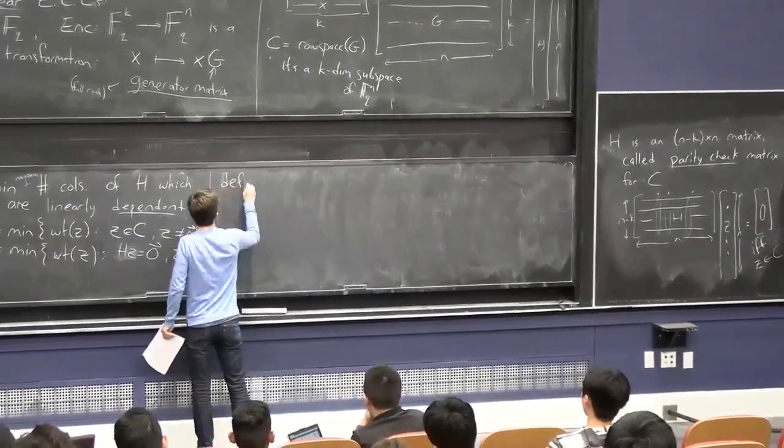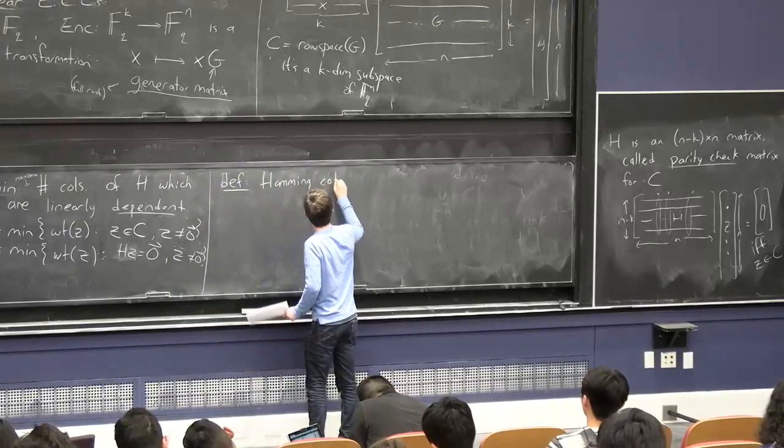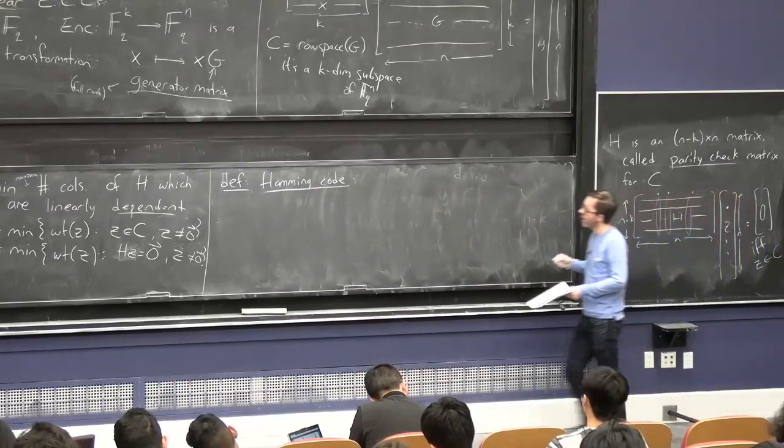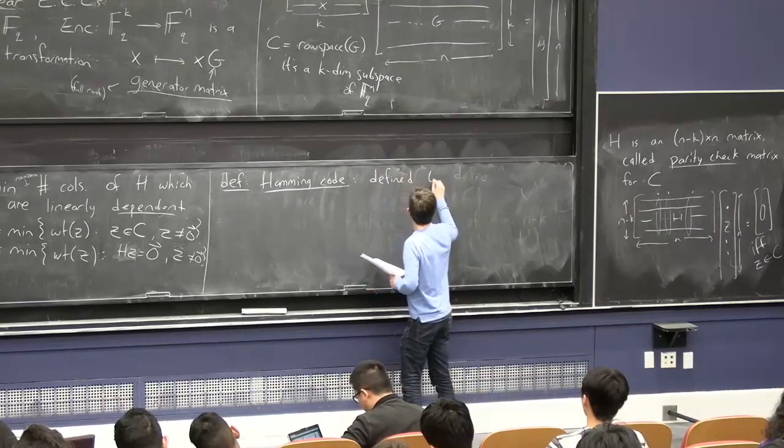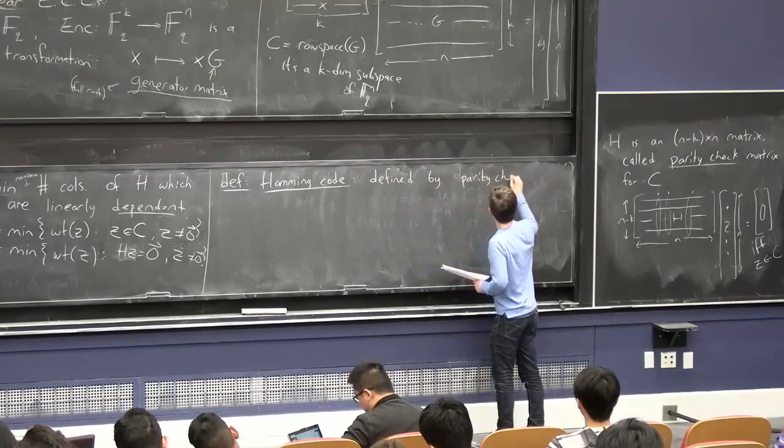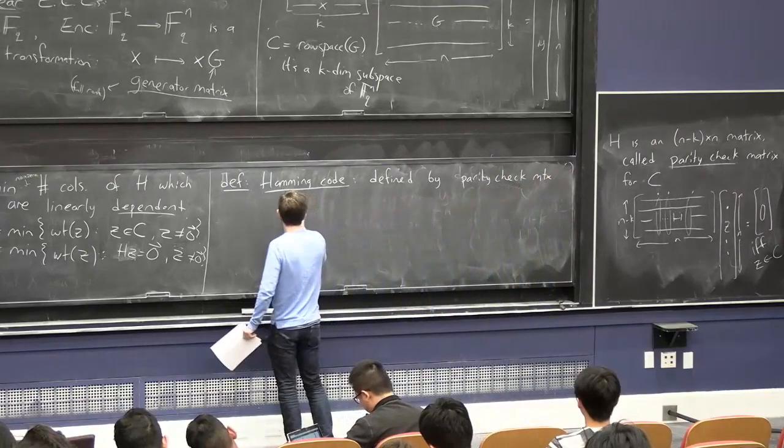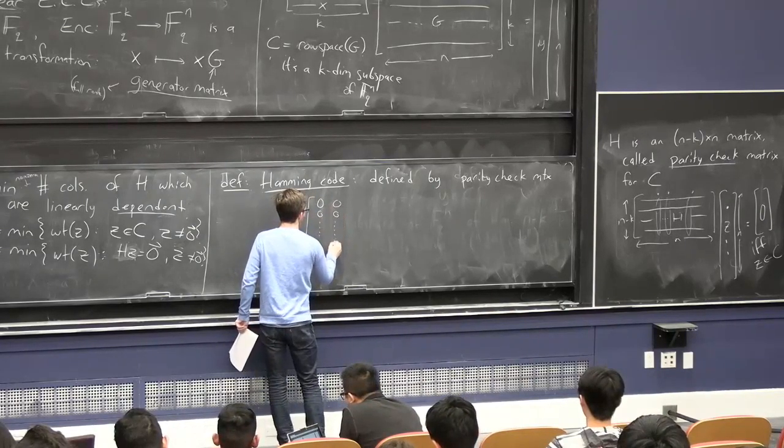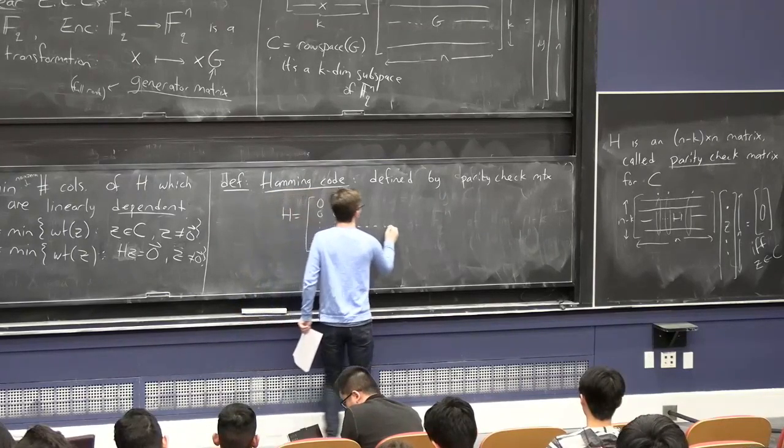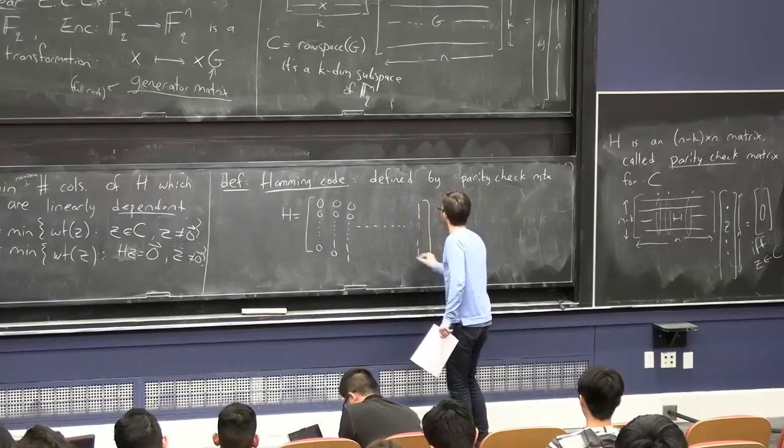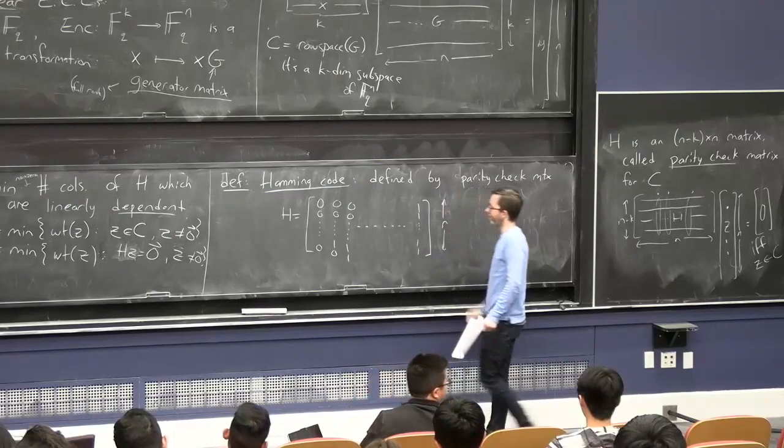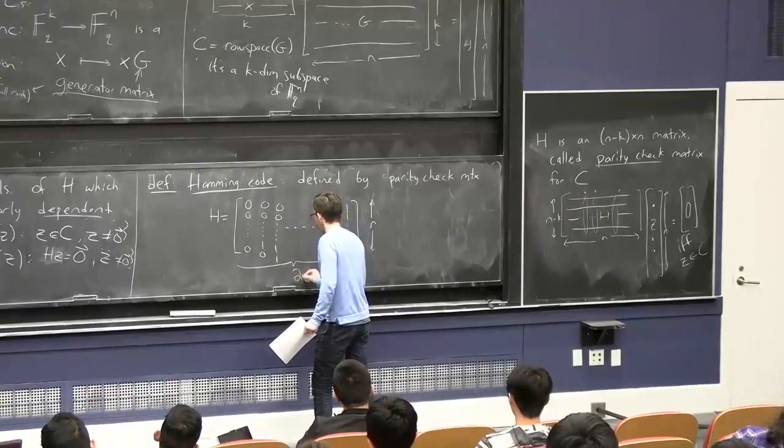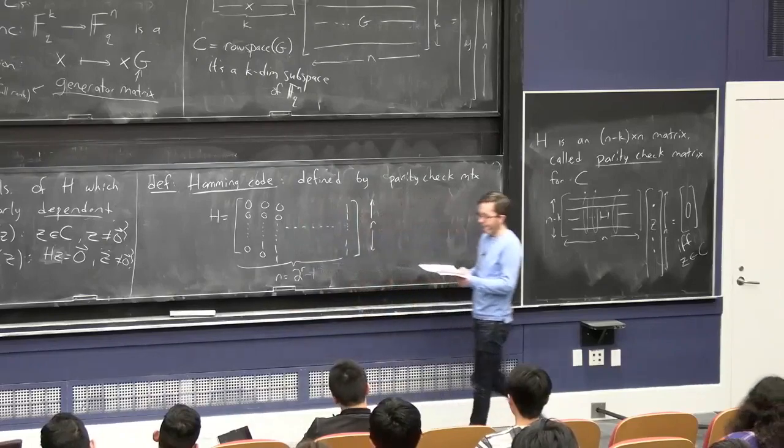So in fact, this code, when we do this idea, is called the Hamming code. And one way to define it is not by saying what its generator matrix is, but to say what its parity check matrix is. So it's defined by having a parity check matrix H, which is just literally all whose columns are all possible strings of some fixed length. I'll call this length R. All possible columns except for the all zeroes column. So if I fix the height to be R, then, of course, the width is 2 to the R minus 1. This will be our N.